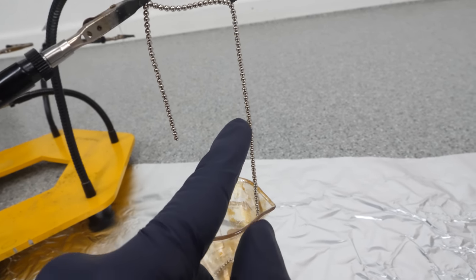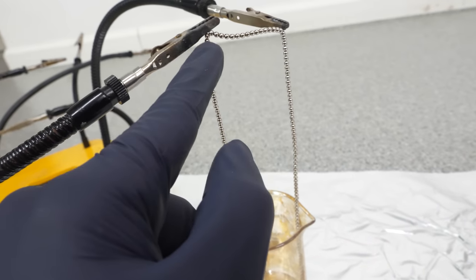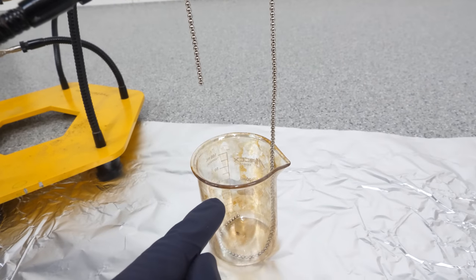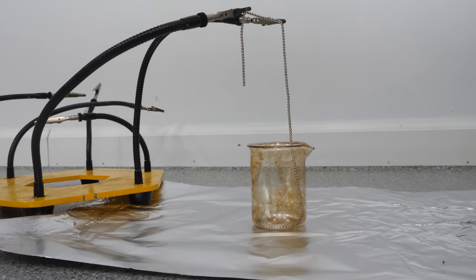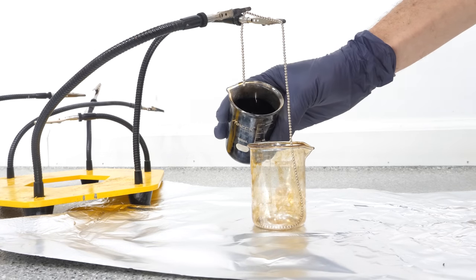So we'll see if the ferrofluid will get sucked up this chain, move across and then drip back down into the cup to create perpetual motion. Okay. Here we go. Three, two, one.